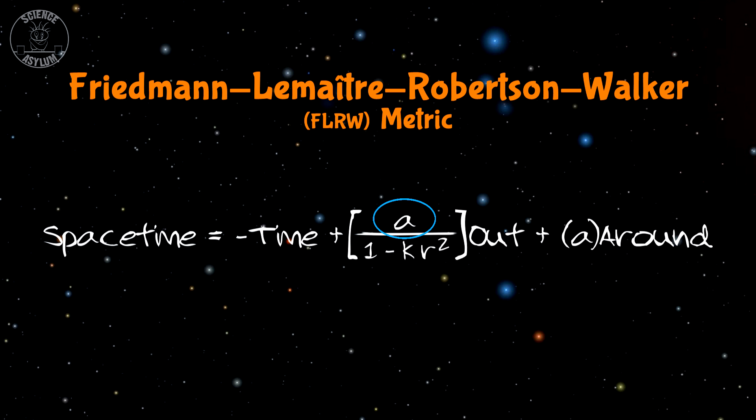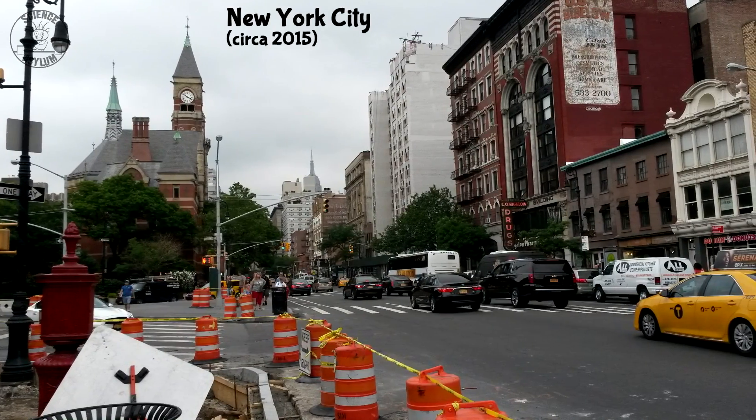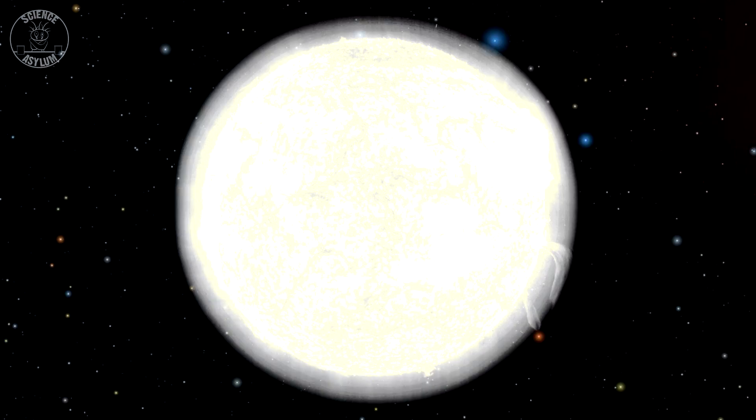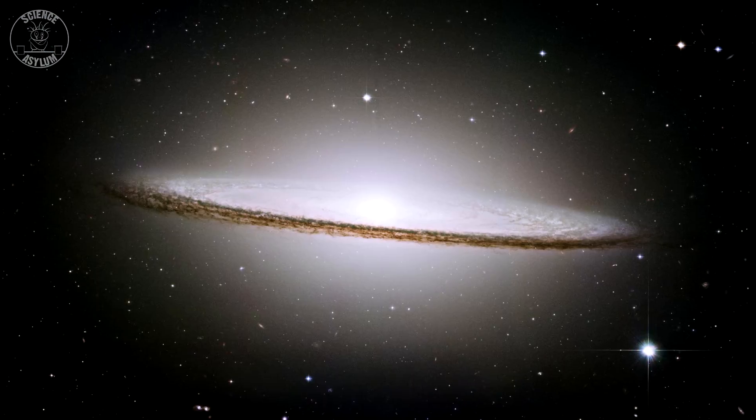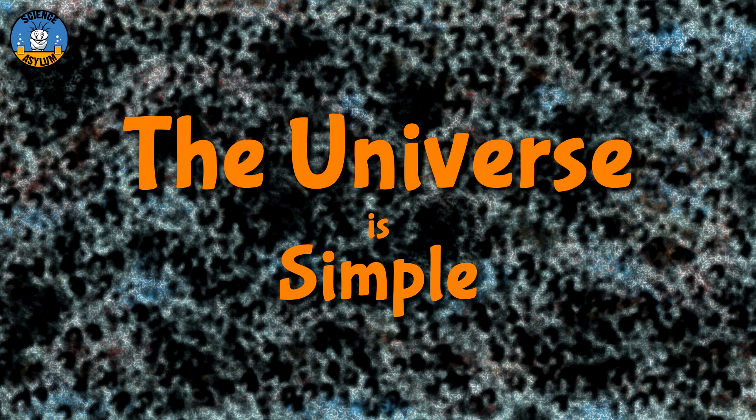That's just the scale factor from the FLRW metric. It's neat how this all fits together. The fact that we even get to use a metric that simple is because the universe is mind-blowingly uniform on the large scale. Our world isn't uniform — it's part of what makes it interesting. The same can be said for the scale of planets, stars, galaxies, or even clusters of galaxies. But on the grand scale, those are insignificant details. The universe is simple.